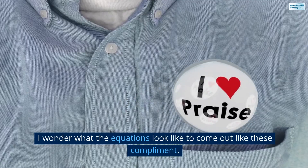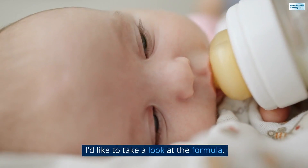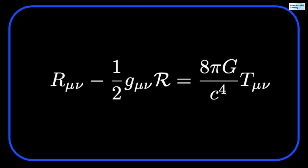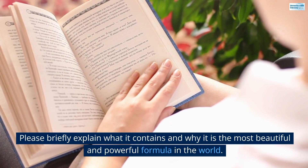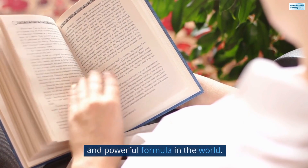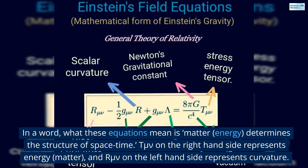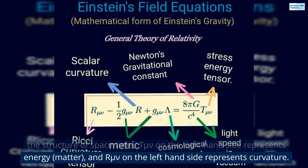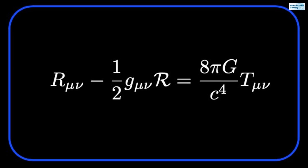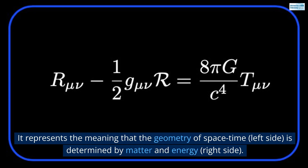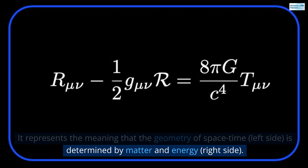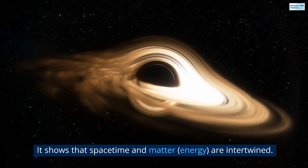Q11. I wonder what the equations look like to come out with these compliments. I'd like to take a look at the formula. That's it — how is it? Q12. Wow, I can't even read it. Please briefly explain what it contains and why it is the most beautiful and powerful formula in the world. In a word, what these equations mean is: matter and energy determine the structure of space-time. T-mu-nu on the right-hand side represents energy and matter, and R-mu-nu on the left-hand side represents curvature. It represents the meaning that the geometry of space-time (left side) is determined by matter and energy (right side). It shows that space-time and matter and energy are intertwined.